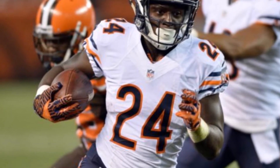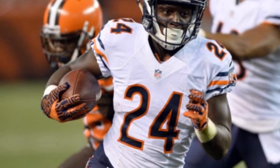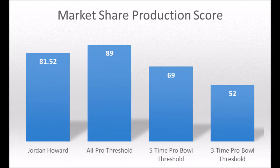Starting with Jordan Howard's college production, he had an 81.52 total offensive mark share production score. Based on my data, that hits the five-time Pro Bowl threshold and three-time Pro Bowl threshold for running backs, meaning the majority of those Pro Bowl running backs since the 1969 NFL draft class scored 69 or higher and 52 or higher. Jordan Howard at 81.52 was essentially a Pro Bowl production running back coming out of college.